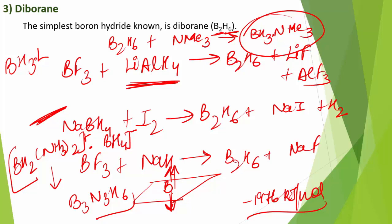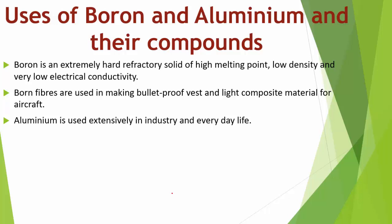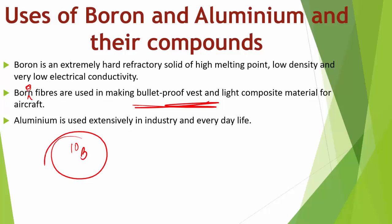Uses of boron and aluminium and their compounds: Boron is a hard refractory solid with high melting point, low density, and very low electrical conductivity. Boron fibers are used in bulletproof vests and light composite materials for aircraft. Due to boron's high ability to absorb neutrons, metal borohydrides are used in the nuclear industry as protective shields and control rods.